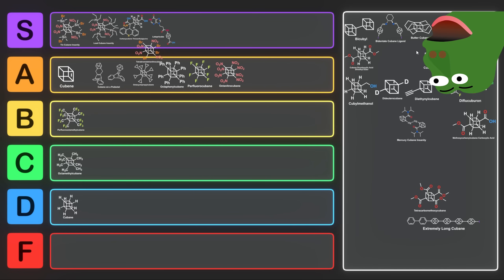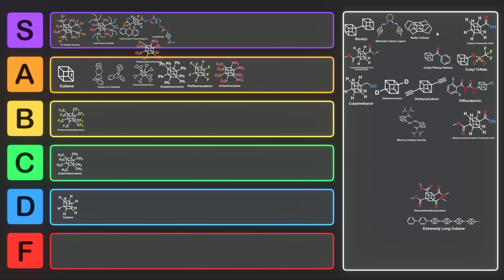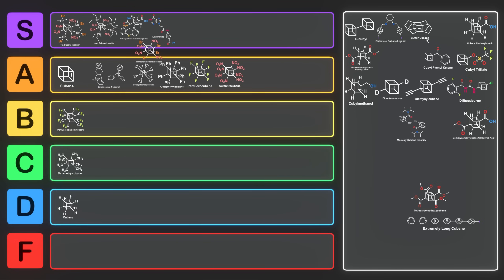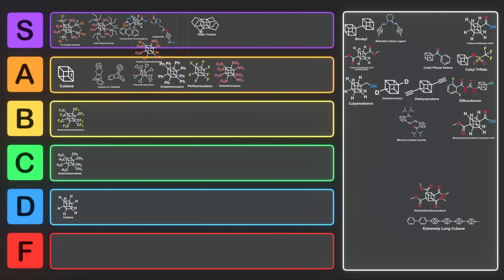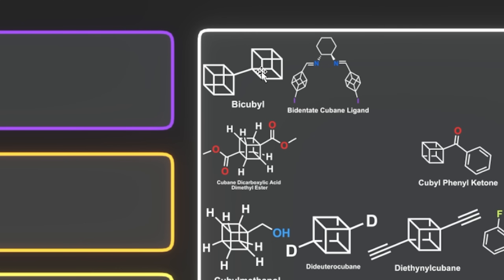We also have another octa-substituted cubane that's even more ridiculous: buttercubane, or as I like to call it, buttercube. Buttercube was made in a crazy way — they already had most of the cubane built with just a couple double bonds remaining, and when they tried to close it they got a bit of buttercube along with another product resembling their starting material. This thing clearly doesn't want to exist, but I want it to exist so badly. Buttercube goes right into S tier.